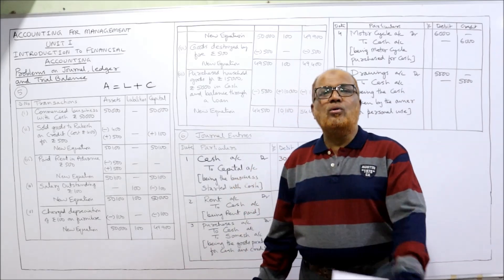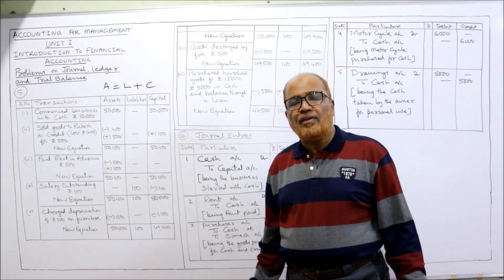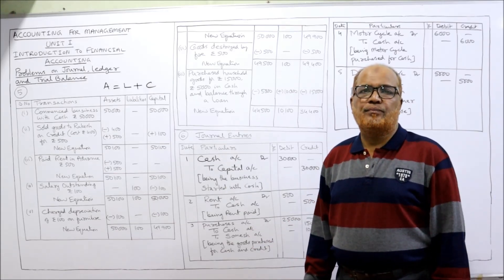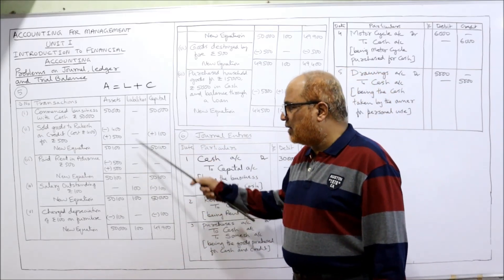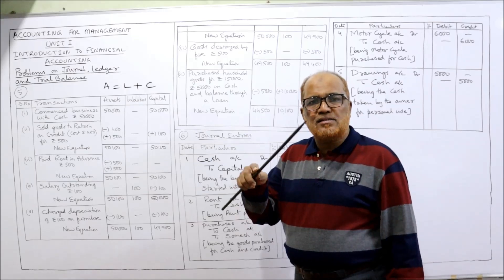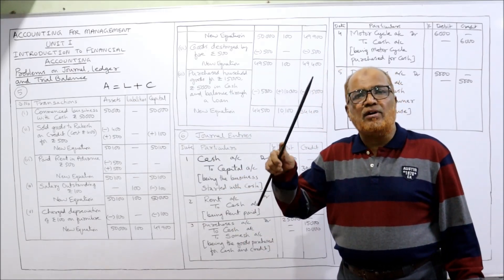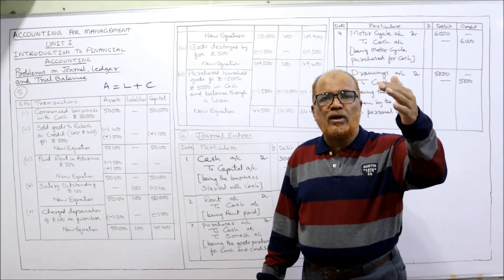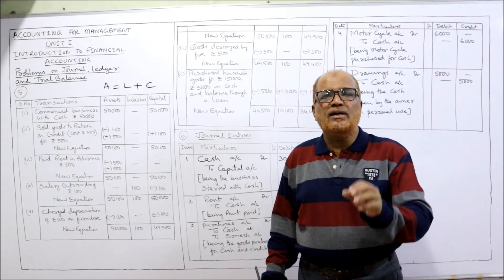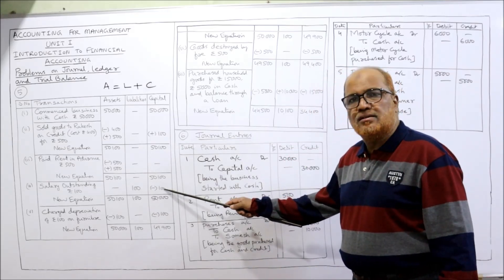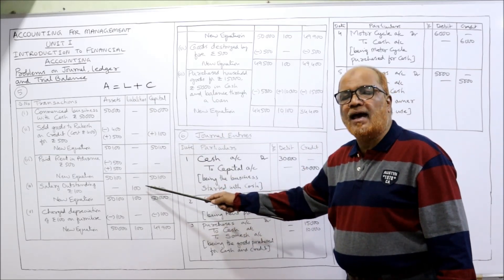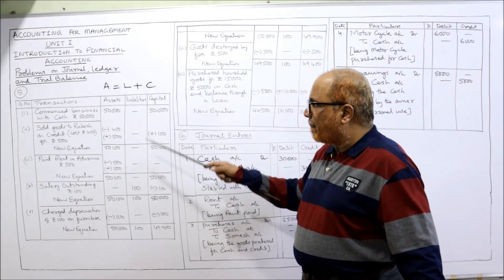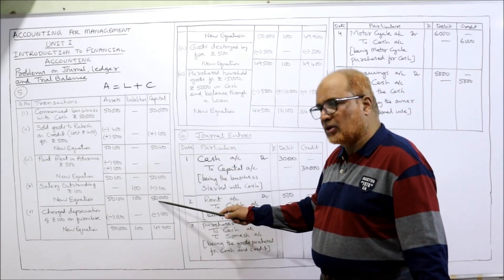Fourth transaction: outstanding salary 100. Outstanding salary means 100 rupees salary not yet paid — it is a liability. Salary is an expense; when expense is incurred, profit comes down, and when profit comes down, capital comes down. So liability increases by 100 and capital decreases by 100. New equation: assets 50,100; liabilities 100; capital 50,100 − 100 = 50,000. Check: 100 + 50,000 = 50,100.